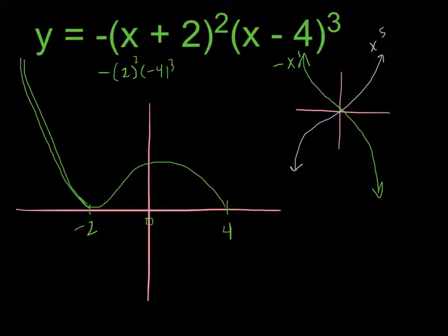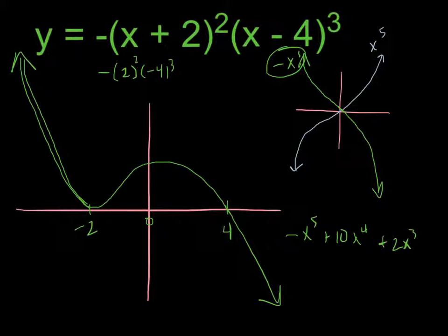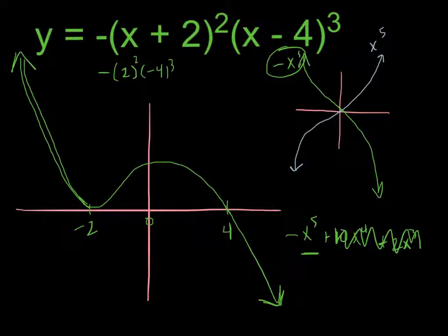Then eventually it's got to cross at 4. Here I do not have to do any tests — the basic path of a 5th-degree polynomial tells us it must eventually dive down, because the negative x to the 5th term is going to overpower everything else. If I foiled this out and got negative x to the 5th plus 10x to the 4th plus 2x cubed, eventually the x to the 5th term dominates and it simply looks like a 5th-degree polynomial. And so that's the graph of this function.